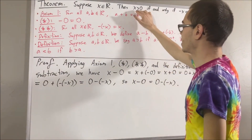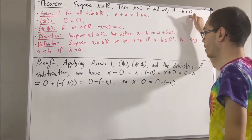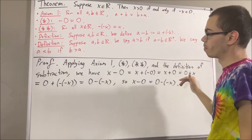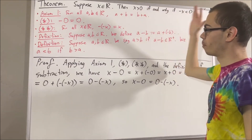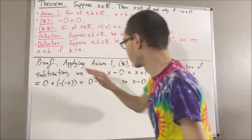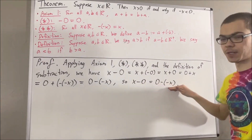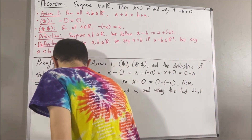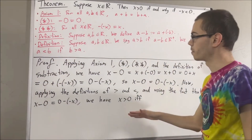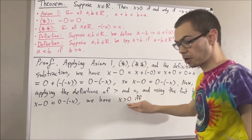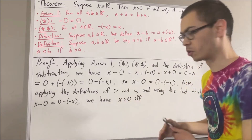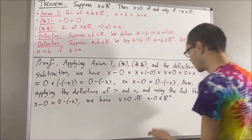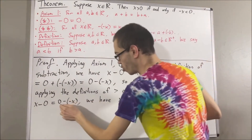Now, the whole goal is to show x is greater than zero if and only if negative x is less than zero. To show that, we are going to establish a chain of if-and-only-ifs, applying the definition of greater than and less than, and using the fact that x minus zero is equal to zero minus the negative of x. To start, by definition of greater than, to say that x is greater than zero is equivalent to saying x minus zero is a positive real number. But then, since x minus zero equals zero minus the negative of x, that is equivalent to saying zero minus the negative of x is a positive real number.